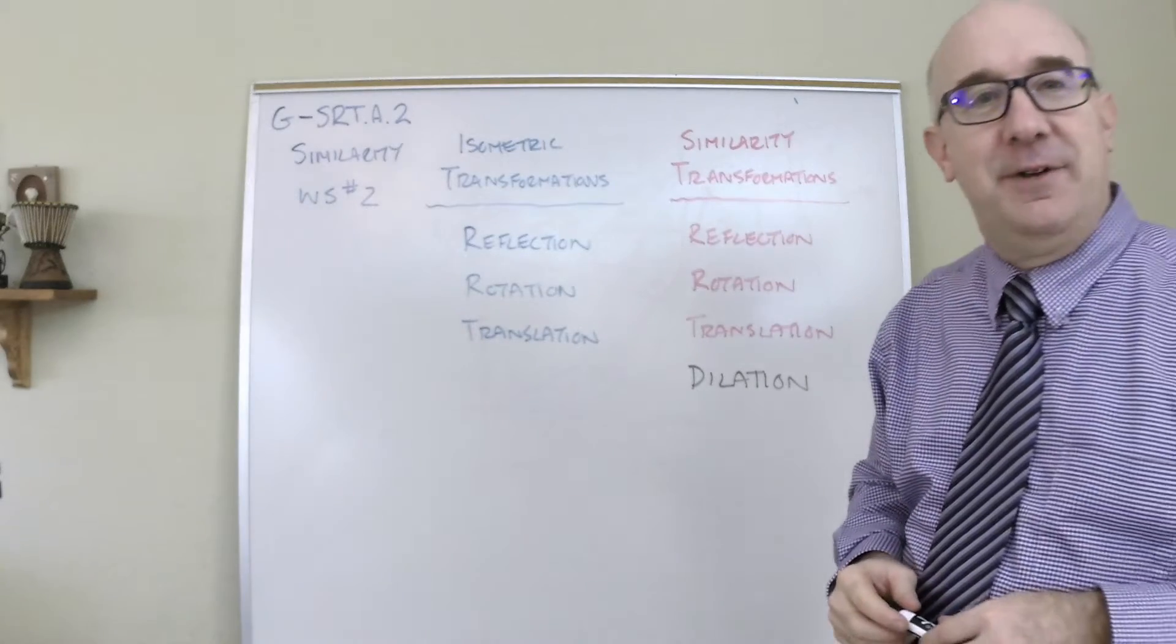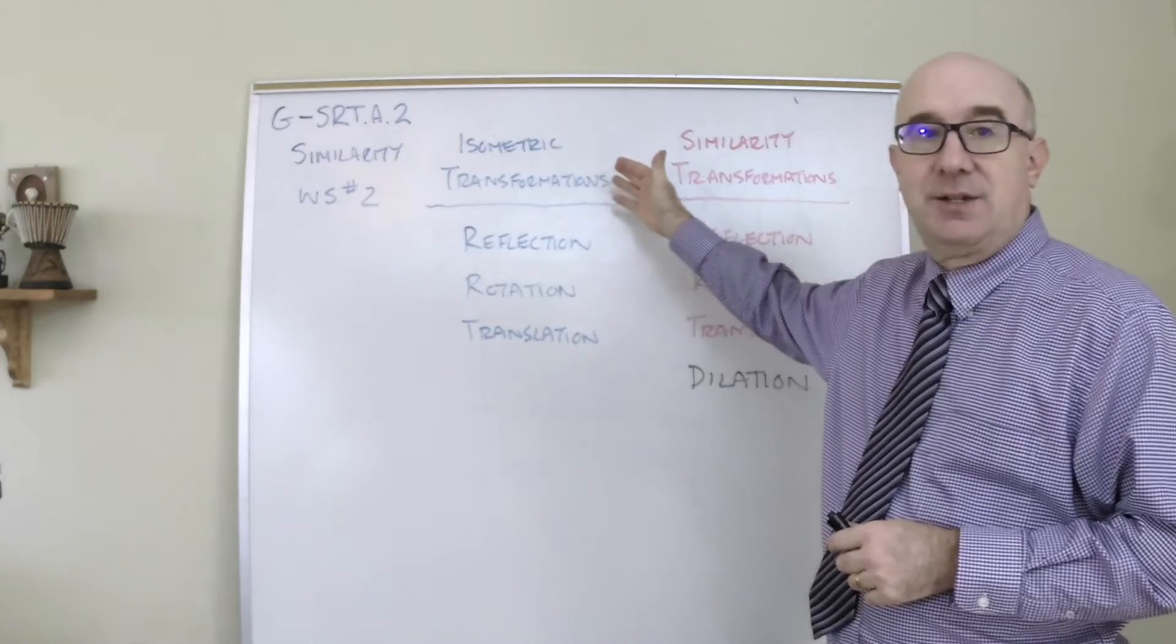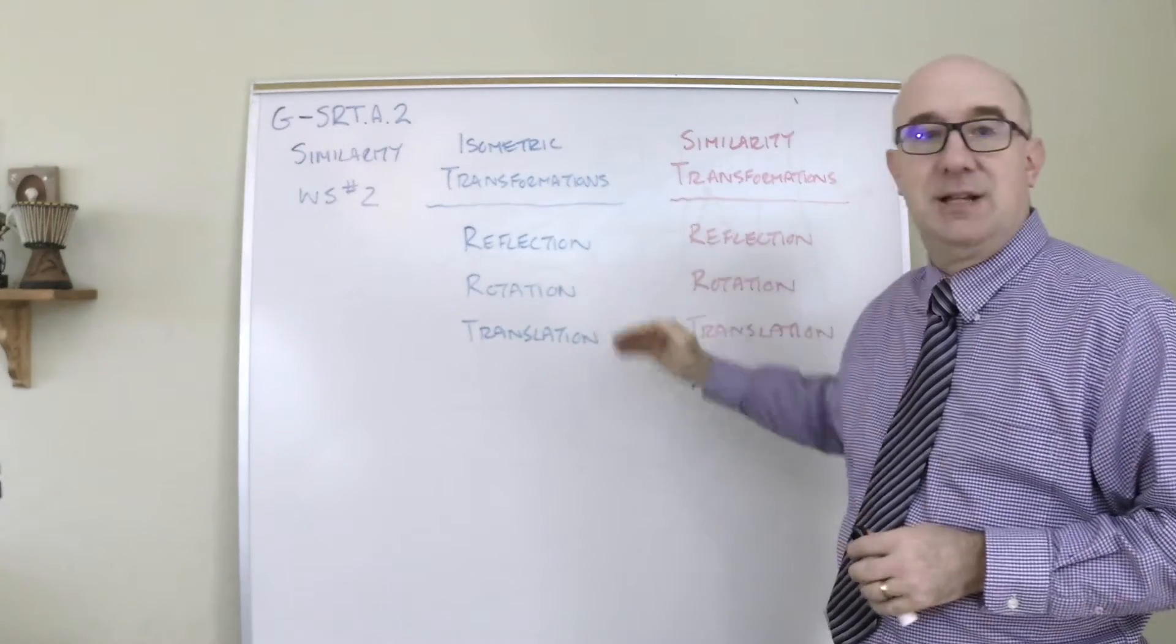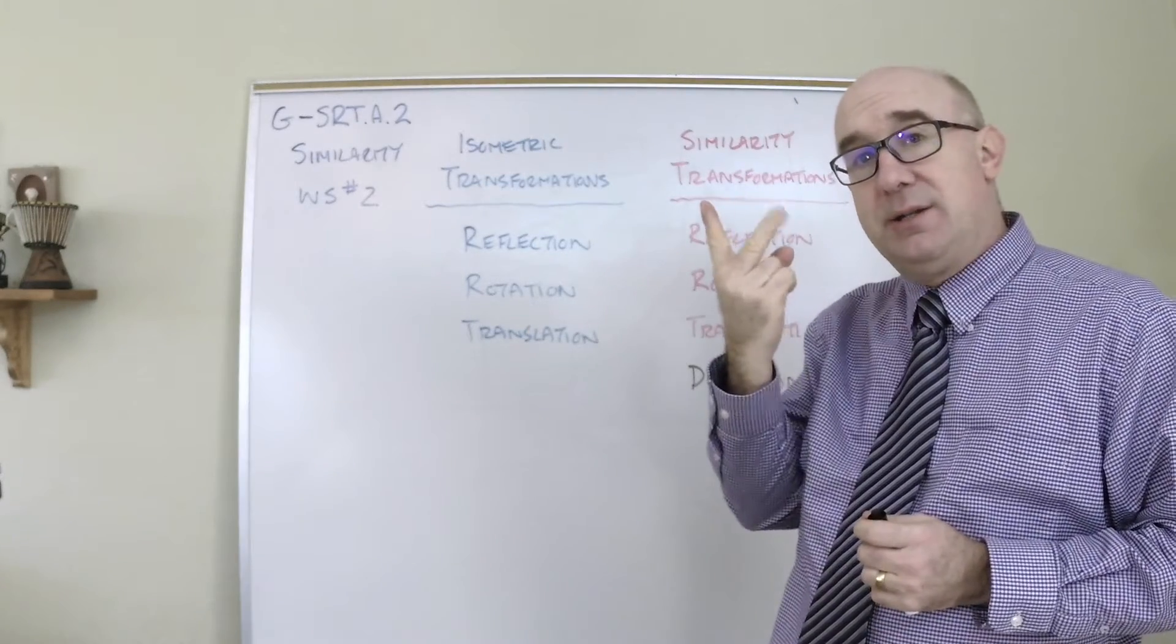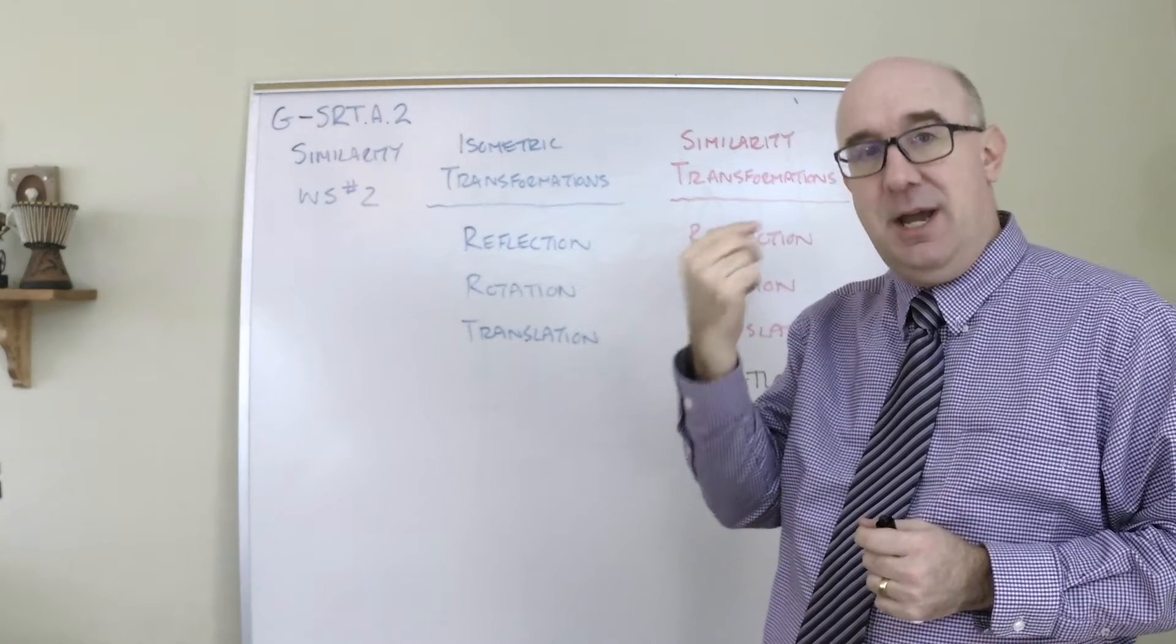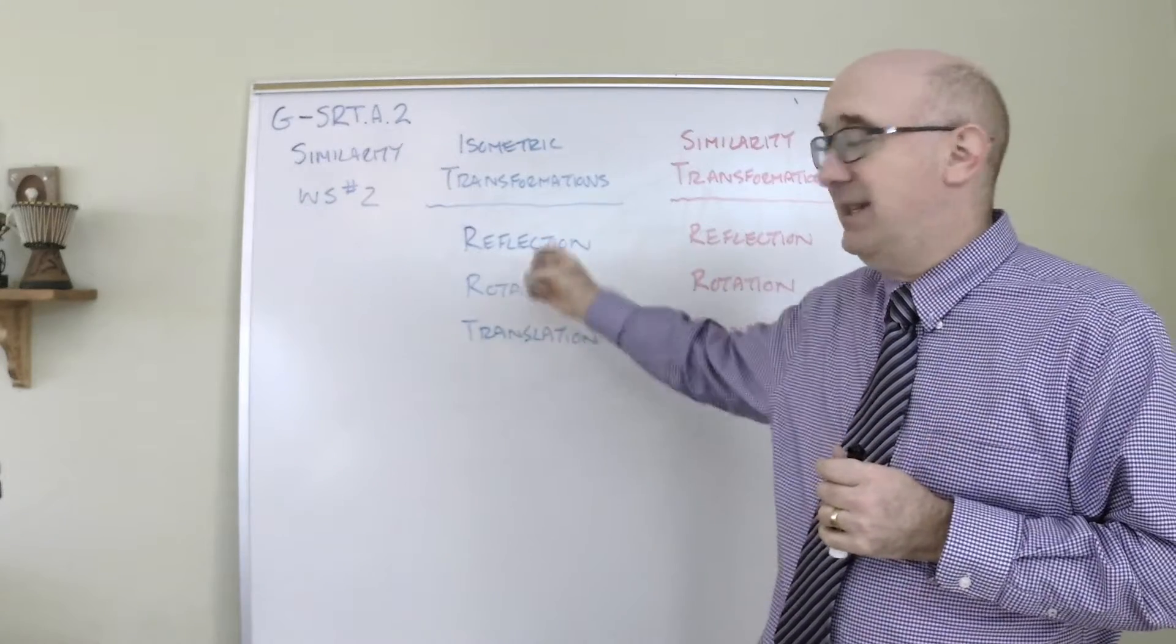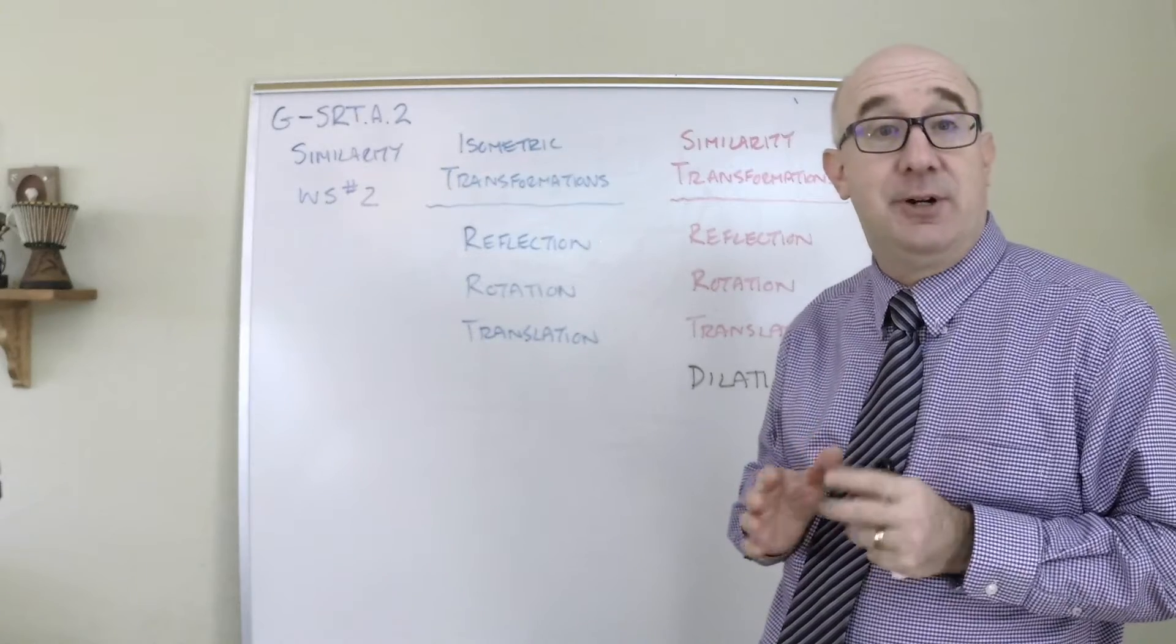This is a lot like our definition of congruence. With congruence we talked about the isometric transformations: reflection, rotation, translation. These motions are isometric, which locks in two things. It locks in shape because it locks in the angles, and two, it locks in size because it locks in the distances between those points, thus isometric or rigid.